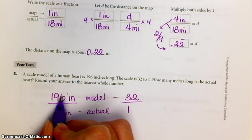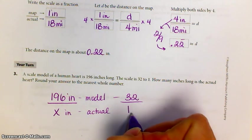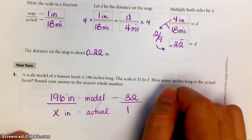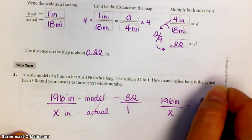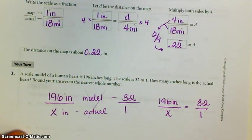Model heart over actual heart. Model size over actual size. So, it's 196 inches over x equals 32 over 1.